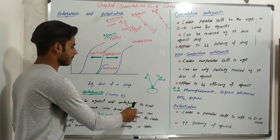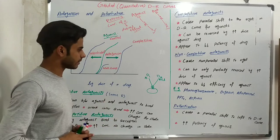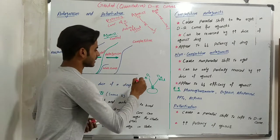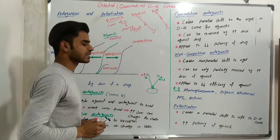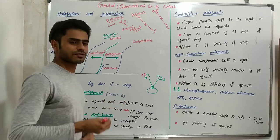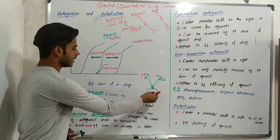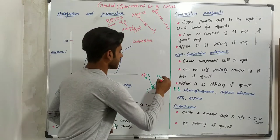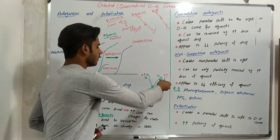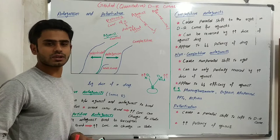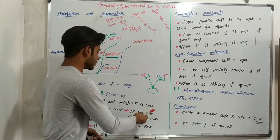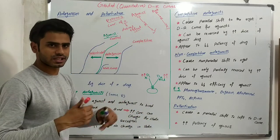Because there is a competition and only weak ionic bonds are formed, we can change the outcome by changing concentration. If we increase the concentration of the agonist, the agonist will go and bind with the receptors in a better way — agonist will win. Conversely, if we increase the concentration of the antagonist, it will bind with the receptors in a better way and win. So we can change the state simply by changing the concentration.